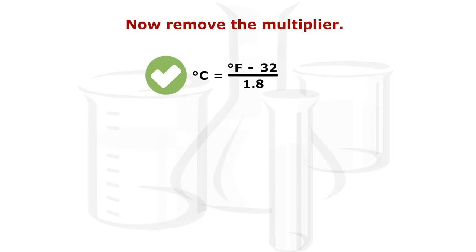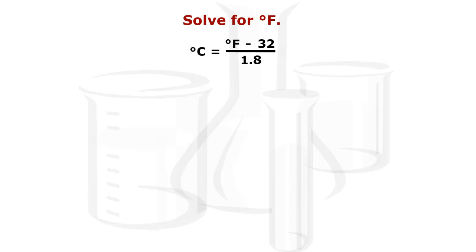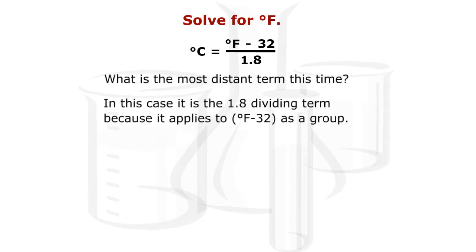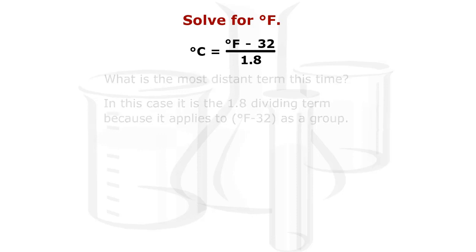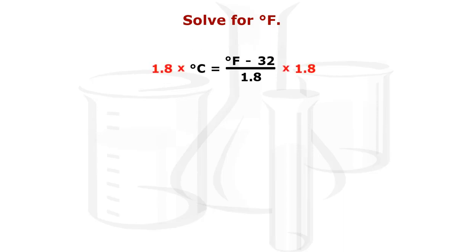In order to check our final answer, let's try our last example in reverse. Solve for degrees Fahrenheit. What is the most distant term this time? In this case, it is the 1.8 dividing term because it applies to degrees Fahrenheit minus 32 as a group. 1.8 degrees Celsius plus 32 equals degrees Fahrenheit.